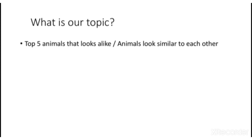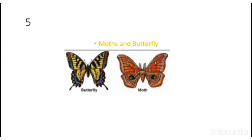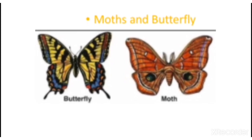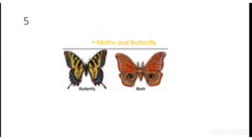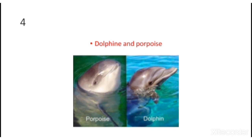Number 5: Moths and Butterflies. As you can see in this picture, there are two flying animals — butterflies and moths. Not only this color, but there are different colors and different species of these flying animals and they look alike, making it very difficult to identify them.